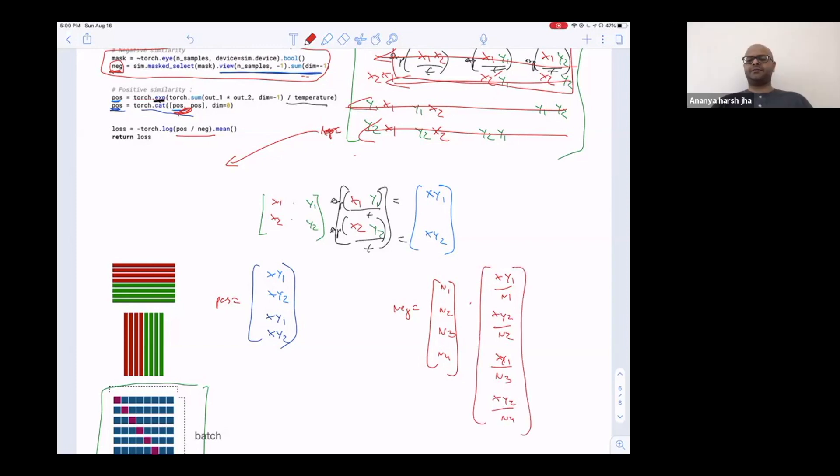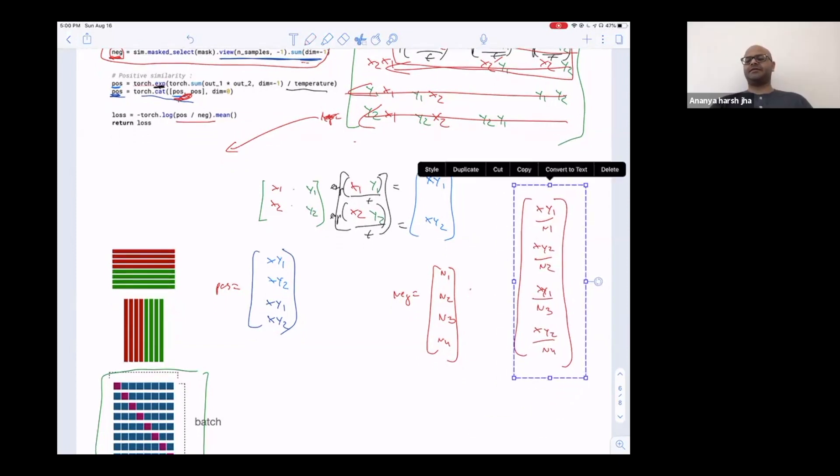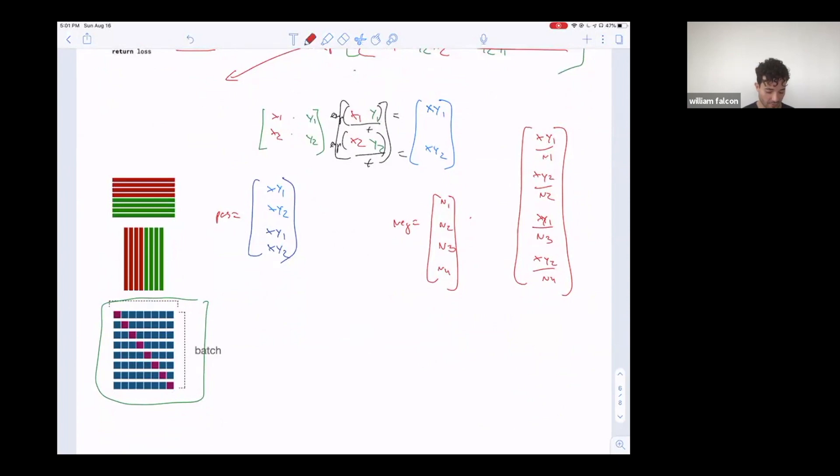And here I would like to point out the reason we have two copies of x·y1 in the numerator and two different denominators for them is because this loss is symmetric. So if you look at what constitutes n1, it's x1 dot product with every other vector. But for n3, you have y1 dot product with every other vector. So the denominators for those two are different, but the numerators are the same. Yeah, exactly. So it's symmetric. When you had the two versions of that same image here, you're measuring similarity this way and also this way.